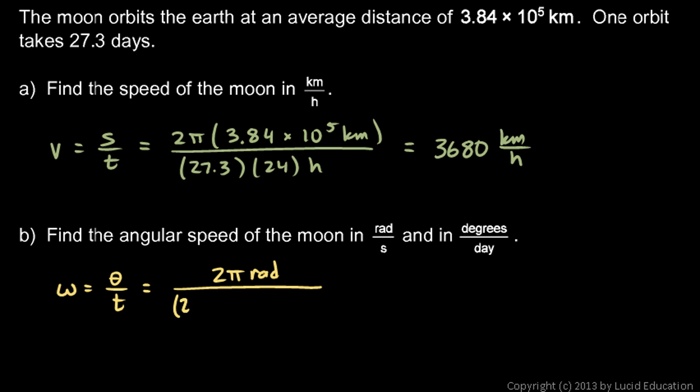That's going to be 27.3, that's the number of days, times 24 will give me the number of hours, and then multiply by 3600, and that will give me the number of seconds. Then, I multiply and divide, and I'm going to have radians per second. This works out to 2.66 times 10 to the negative 6 radians per second.